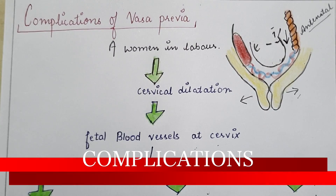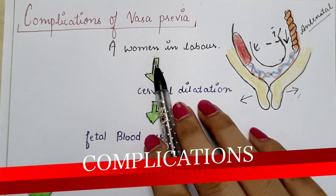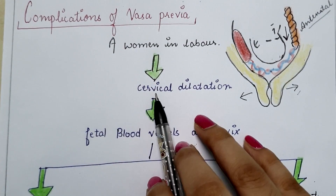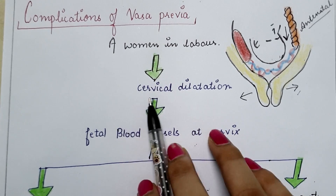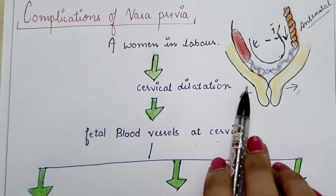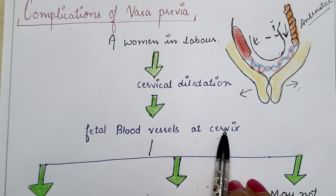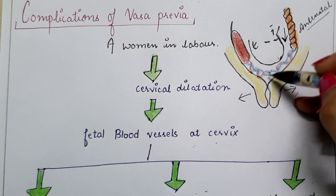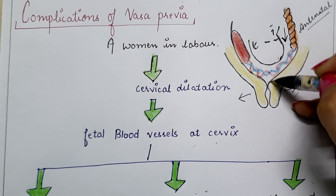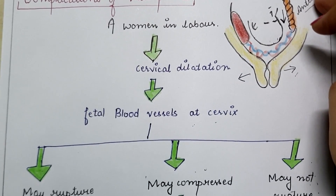Next are the complications of vasa previa. During the first stage of labor, there is cervical dilatation. Fetal blood vessels are present over the internal os of the cervix. There are three possibilities.